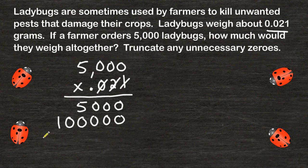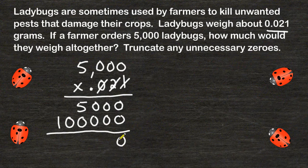The next thing we are going to do is add these digits together. This column is zero, as is this column and this column. This column has a total of 5. This column is zero, and this column is 1.